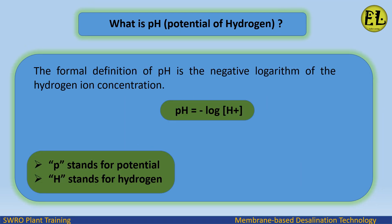What is pH? pH stands for potential of hydrogen. The formal definition of pH is the negative logarithm of the hydrogen ion concentration: pH = −log[H⁺], where P stands for potential and H stands for hydrogen.